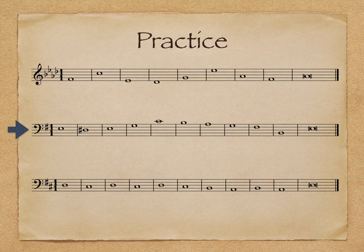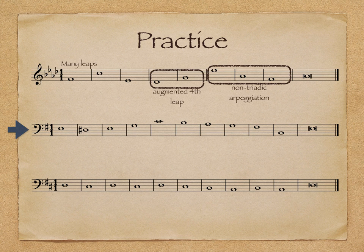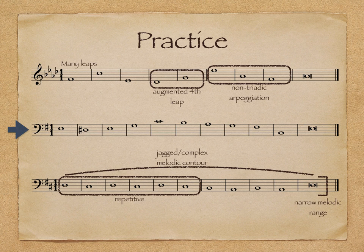Did you choose the middle line as the best? If so, you're right. It's the most flowing because it's mostly stepwise, has a single apex, a variety of pitches, and has a nice contour. The top melody has many leaps, including a leap of an augmented fourth and a non-triadic arpeggiation. The bottom melody is too repetitive, has a jagged or complex melodic contour, and a narrow melodic range. If you happen to write a melody like the top or bottom melodies, your TA will probably make you do it again. It's best to follow the guidelines and write a flowing melody the first time.